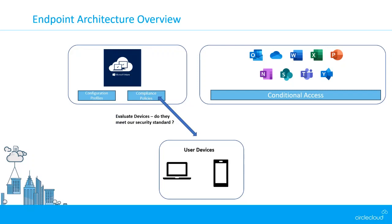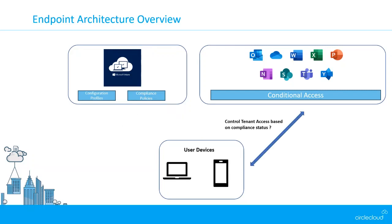Compliance policies evaluate devices — and again, anything that's off-network falls into this category as well. What compliance policies do effectively is evaluate devices against specific criteria and deem them either compliant or non-compliant. This criteria will typically be security-type settings, which we'll go into in more detail in the appropriate section. This criteria can then be used in conditional access policies to control access to our tenants and resources.